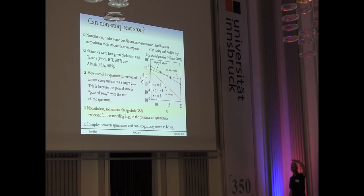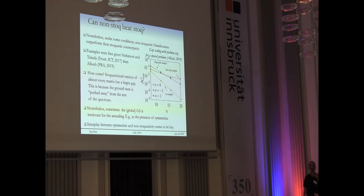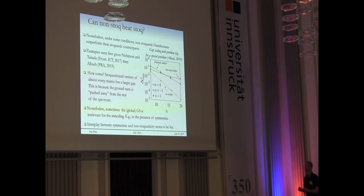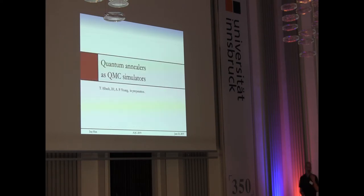The reason stoquasticized Hamiltonians almost always have larger gaps can be explained analytically: going to the stoquastic version pushes the ground state down away from the spectrum, creating a larger gap. However, in quantum annealing with symmetries, the global ground state is not always the crucial one. If the relevant symmetry sector does not contain the global ground state throughout portions of the anneal, all those theorems don't apply. There is an interesting interplay between stoquasticization and symmetry that can lead to non-stoquastic advantages worth studying further.